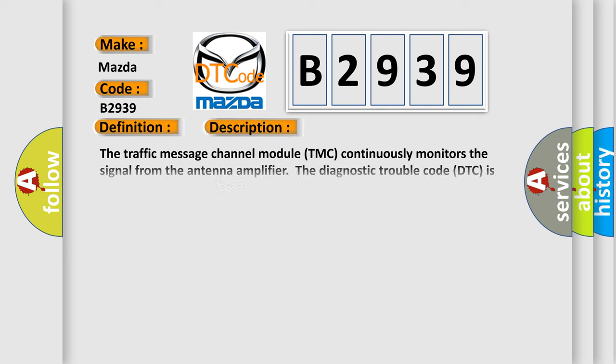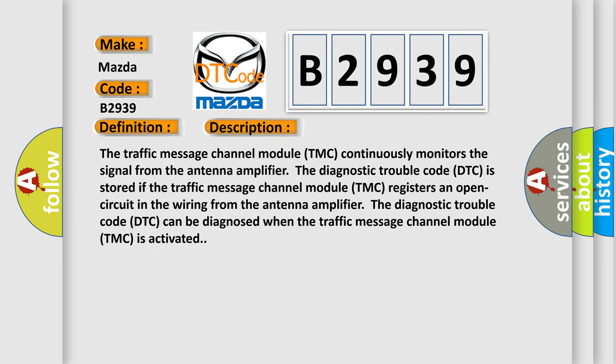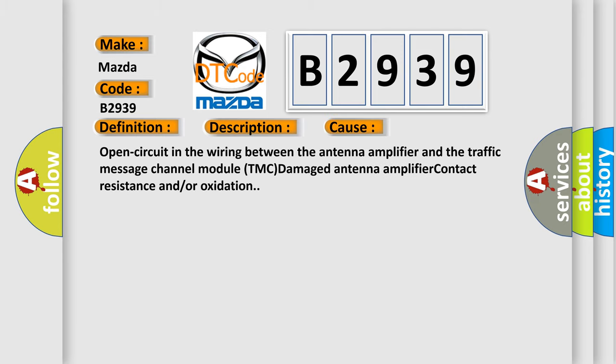The traffic message channel module TMC continuously monitors the signal from the antenna amplifier. The DTC is stored if the TMC registers an open circuit in the wiring from the antenna amplifier. This DTC can be diagnosed when the TMC is activated. This diagnostic error occurs most often in these cases: open circuit in the wiring between the antenna amplifier and the TMC, damaged antenna amplifier, contact resistance, and/or oxidation.